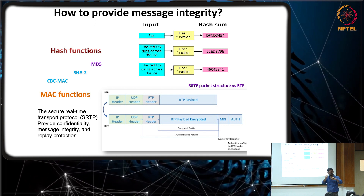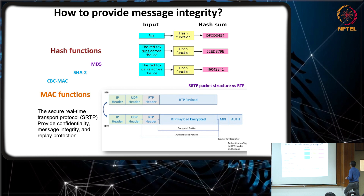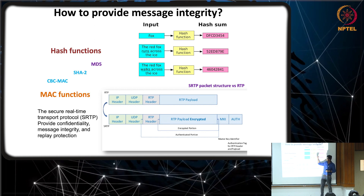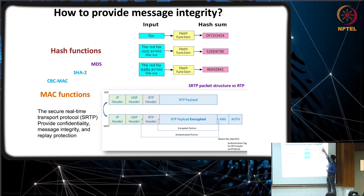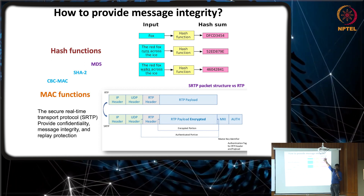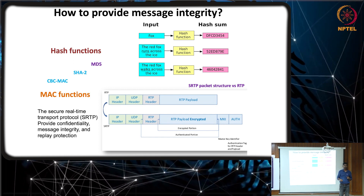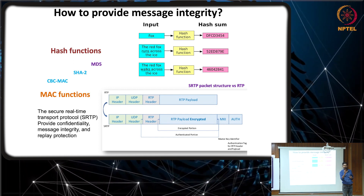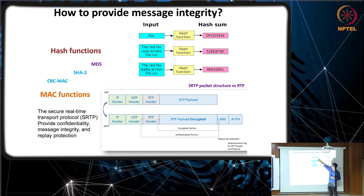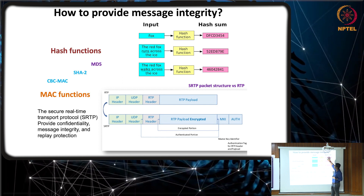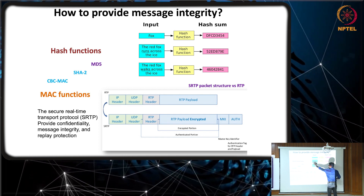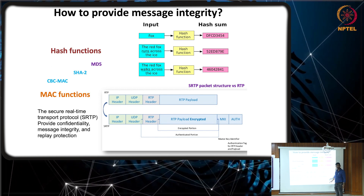For SHA-2, what is the output size? SHA-0 and SHA-1 have an output size of 160 bits. Whatever you give as input — even 1 GB of data — you get 160 bits. This is only a one-way function. If it is a cryptographically strong hash algorithm, you can only go forward: you give an input, you get an output. If you try to reverse — ask the output what its input was — you cannot find it.